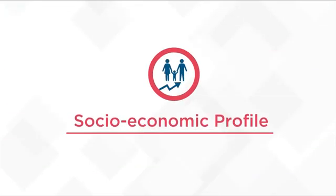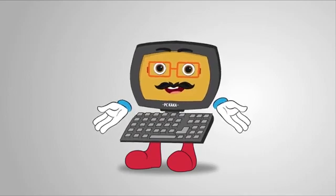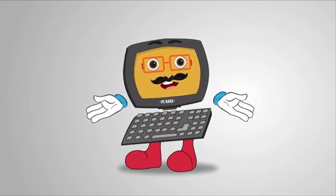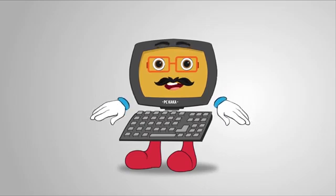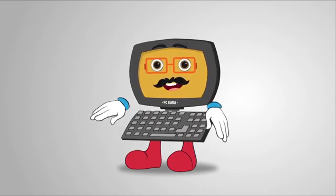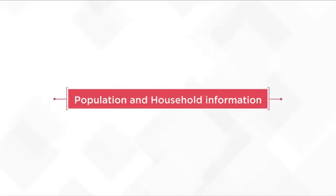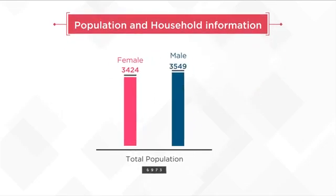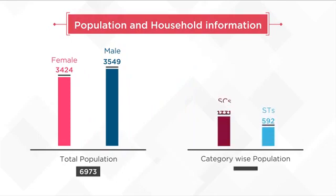Social and economic information about a Gram Panchayat is an important contributor while developing an INRM plan. Village-wise total population and classified household information is shown here. With this information under Mahatma Gandhi NREGA scheme, the required number of potential beneficiaries are identified and works for them can also be planned.